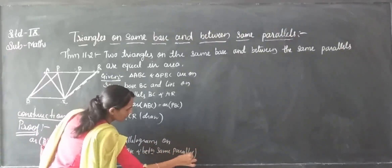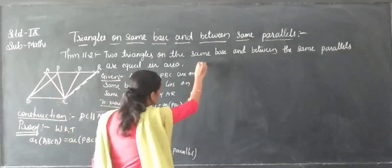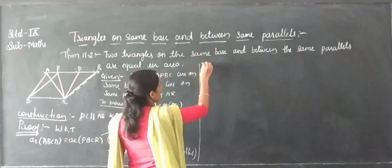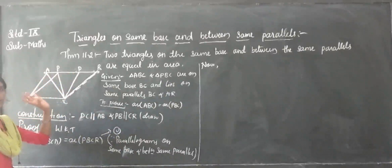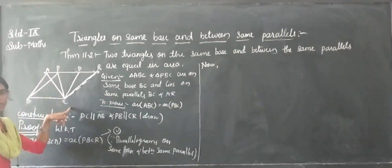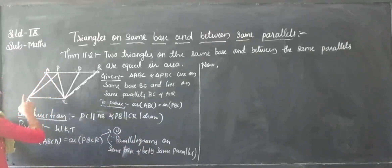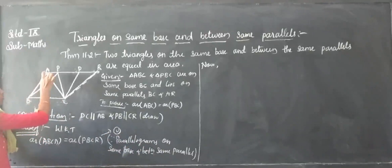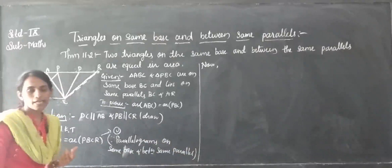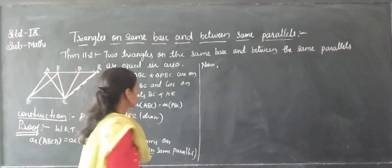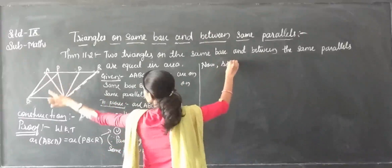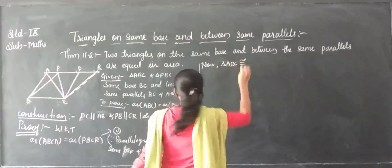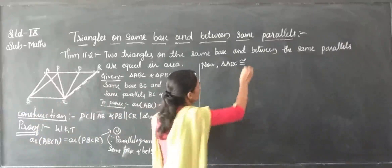So here BC and AR are the same parallel lines — both are parallel lines on the same base BC and between the same parallels BC and AR. So considering this application, if you see the diagonal of parallelogram ABCD, the diagonal AC divides it — so we can write that area of triangle ABC is equal to area of triangle ACD, because the diagonal divides the parallelogram into two congruent triangles.